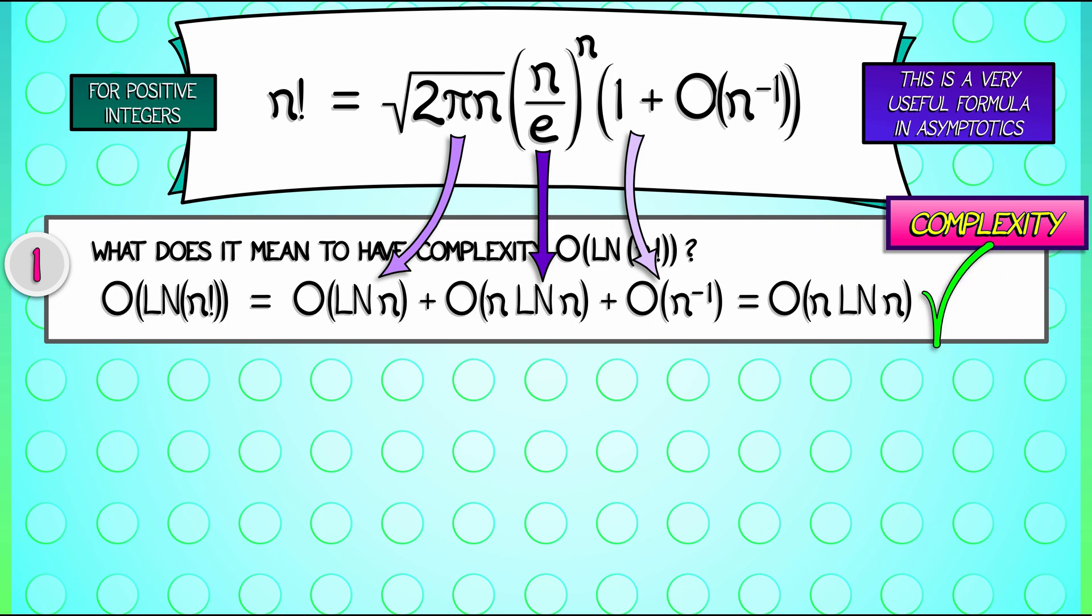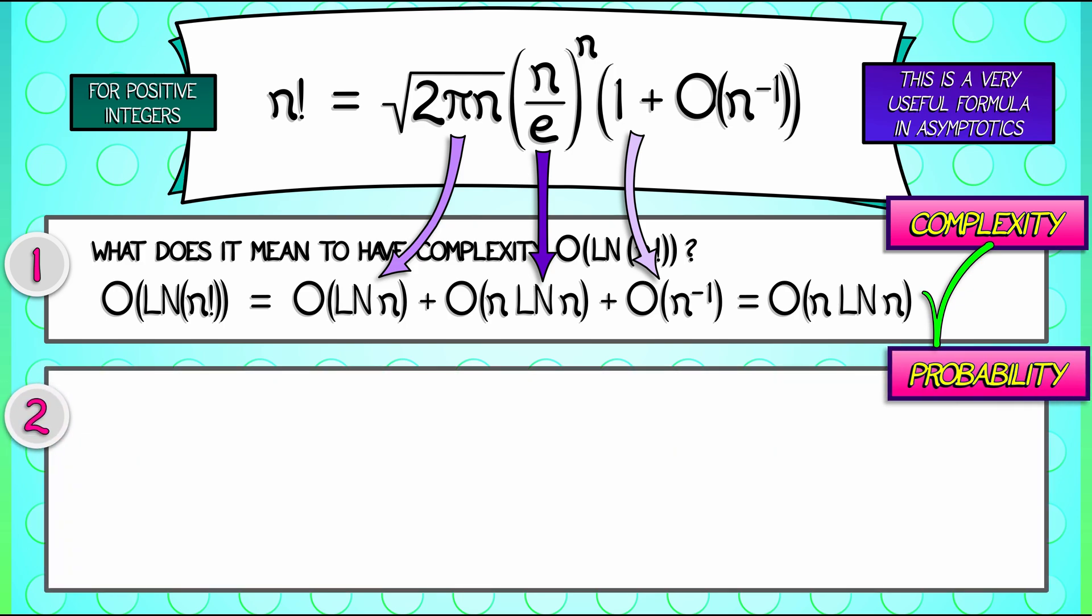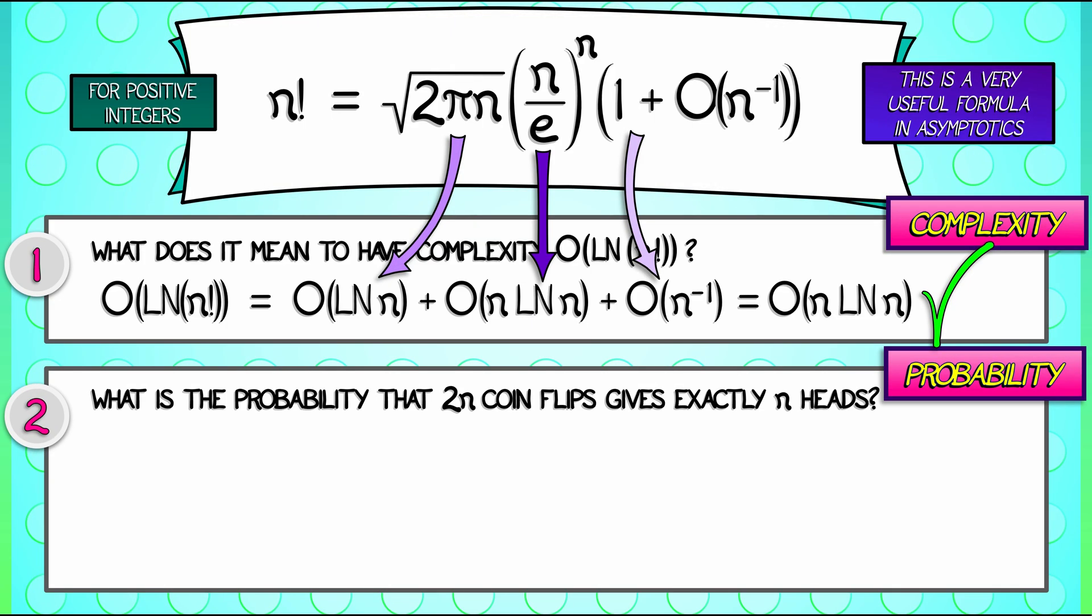Another place in which n factorial appears frequently is in discrete probability. Here's an example. Let's say you have a fair coin and you flip it 2n times. What are the odds that you get exactly half heads and half tails? I don't want to go through all the details of figuring out exactly what that probability is, but if you do so in a natural way, you can show that that probability is quantity 2n factorial divided by n factorial times n factorial times 2 to the 2n power.